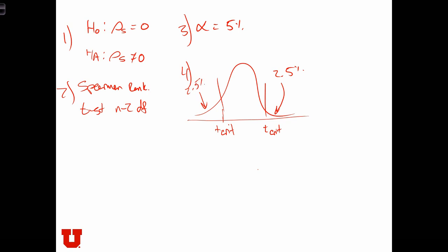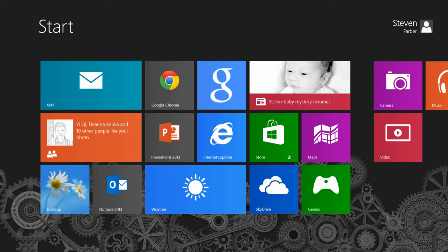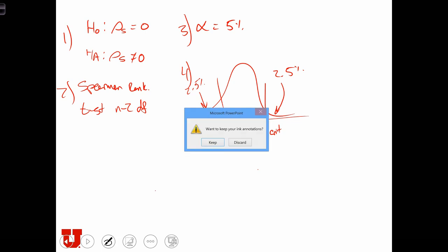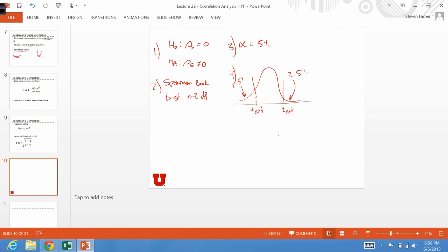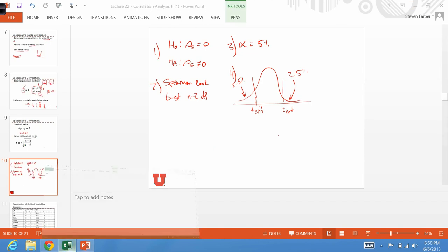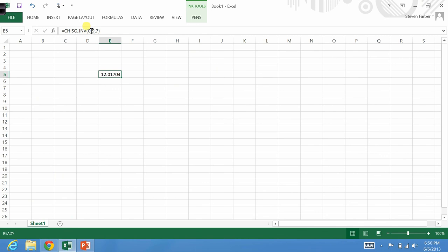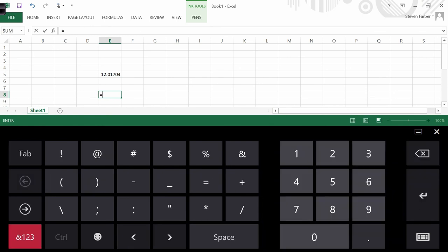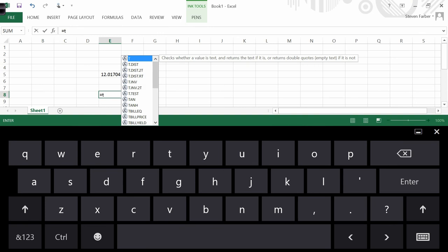I'm going to cheat and use Excel to find the critical values. We're going to use, instead of the chi-squared inverse, let's use the T inverse. We have to say equals T, and let's look for the T inverse, two-tailed.